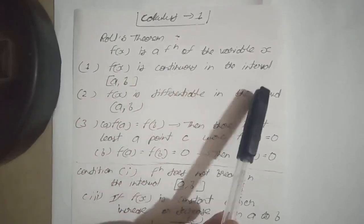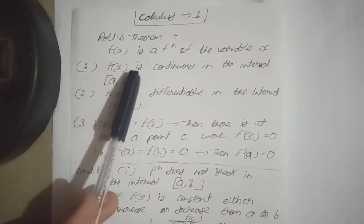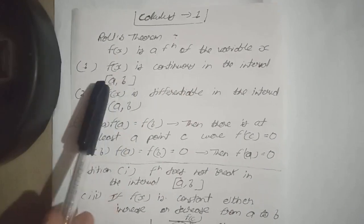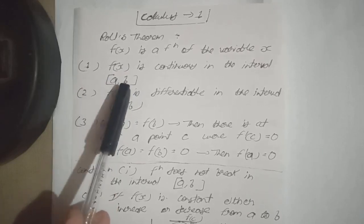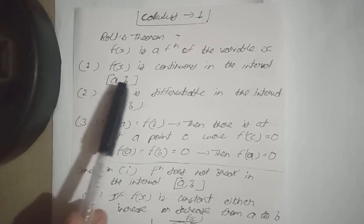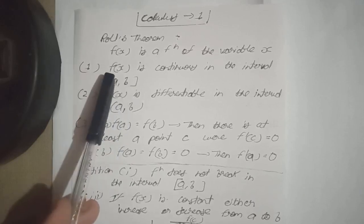f(x) is continuous in the interval [a,b]. These intervals are in square brackets which means a and b both are included. From a to b, a se leekar b tak jitne bhi numbers honge, un sare numbers per f(x) continuous hooga.